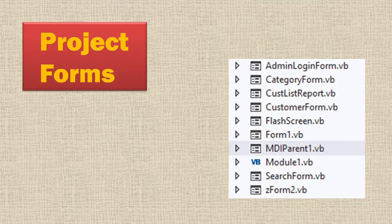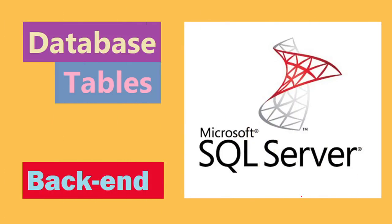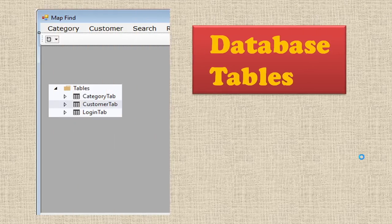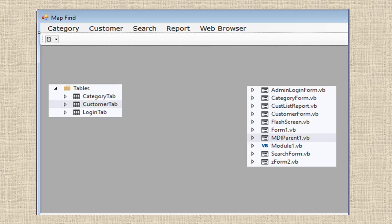Now look at the forms used in this project. Basically, one is a customer form to enter the customer details, a category form to enter the category details, a search form — which is very important — where you can search customers, and a browser form where you can open a new browser and browse any data. For tables, we are using Microsoft SQL Server as the backend and have only three tables: a login table, a category table, and a customer table. All customer or store data will be stored in the customer table. This is an MDI form — once you open the project you get all these links.